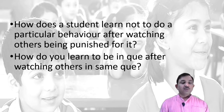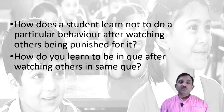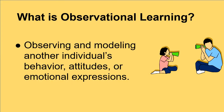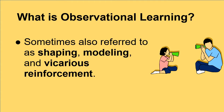How do you learn to stand in a queue after watching others at a railway station, cinema hall, or other places where people are maintaining distance? You basically observe. Observational learning involves observing and modeling another individual's behavior, attitude, and emotional expressions. Sometimes observational learning is also referred to as shaping, modeling, or vicarious reinforcement — terms used in the literature.